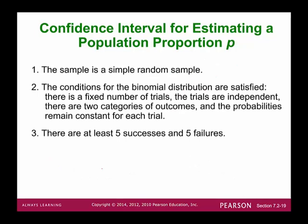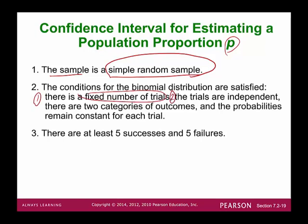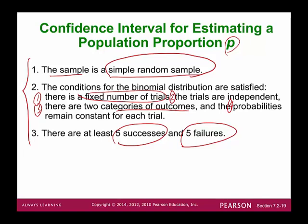The requirements to construct a confidence interval for estimating population proportion P: First, the sample must be a simple random sample. Second, conditions for the binomial distribution must be satisfied — fixed number of trials, trials are independent, two outcome categories (success or failure), and probability of success remains constant. Third, there must be at least five successes and five failures.